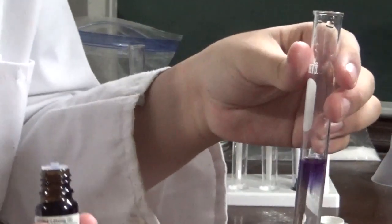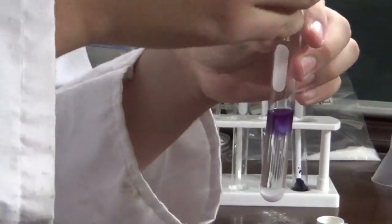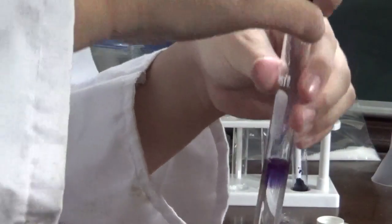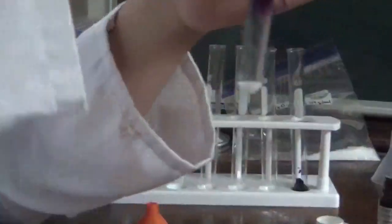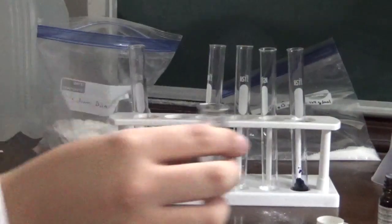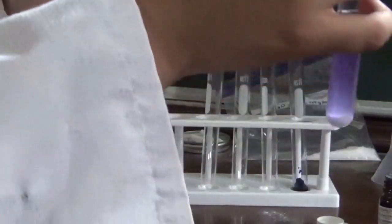There you go, a red solution. Now, there we go, I figured out how to use this bottle. So now if I add some litmus solution to this, simply tipping this over drop by drop.